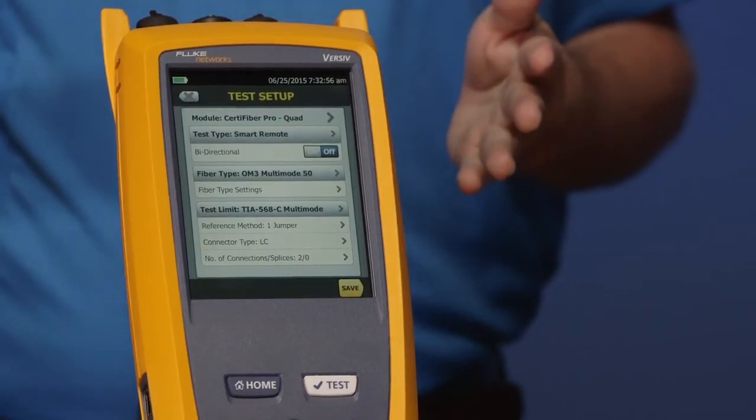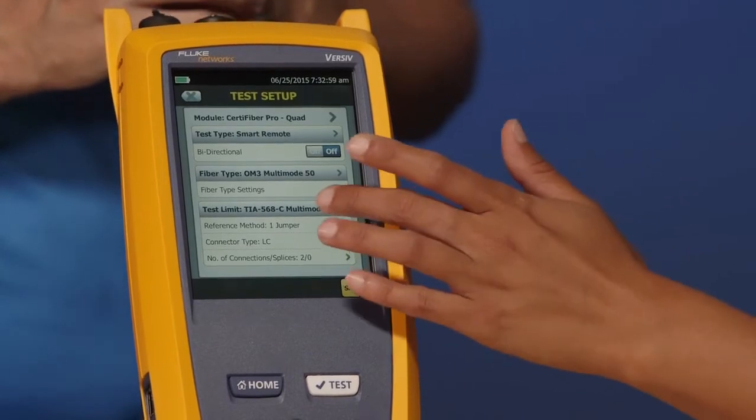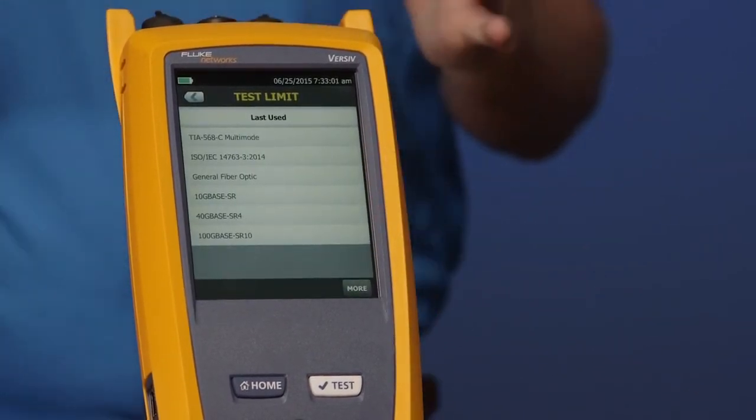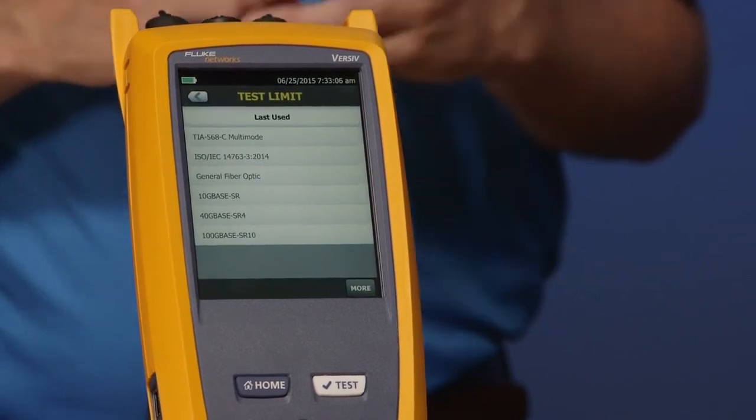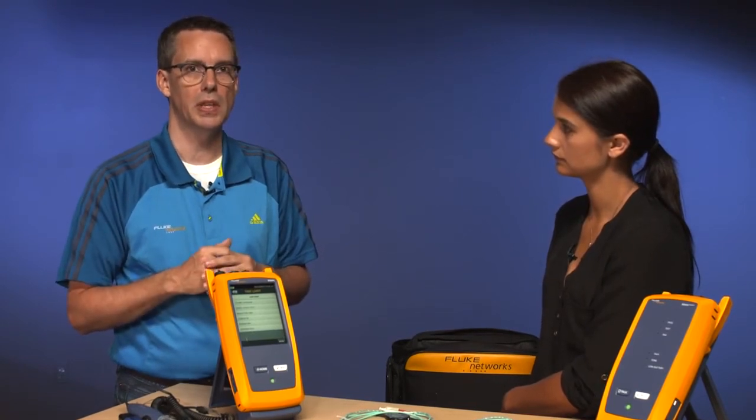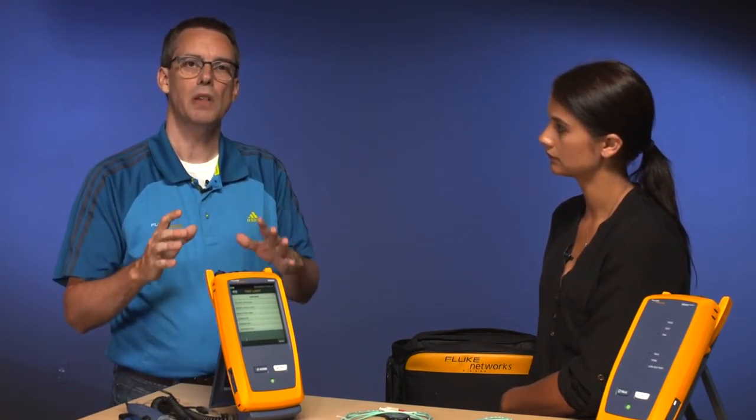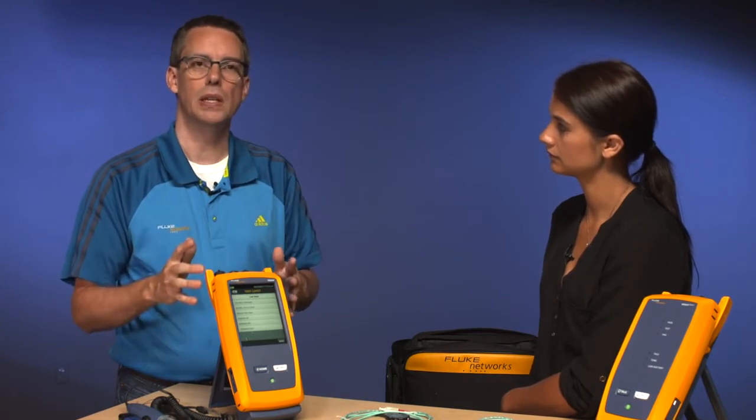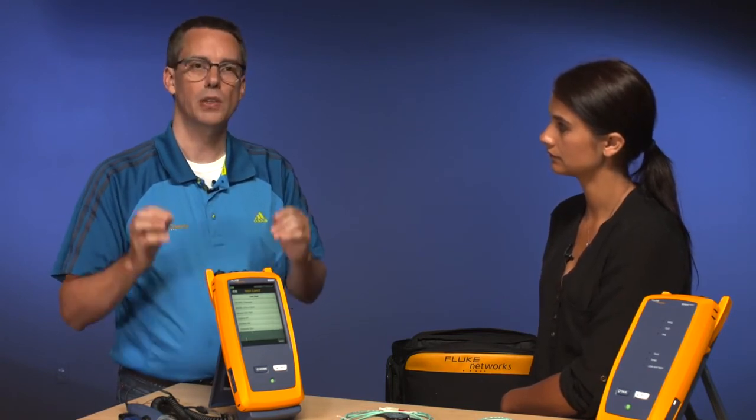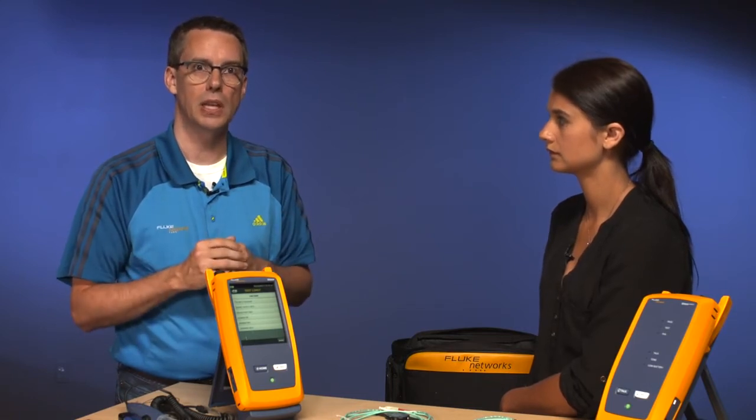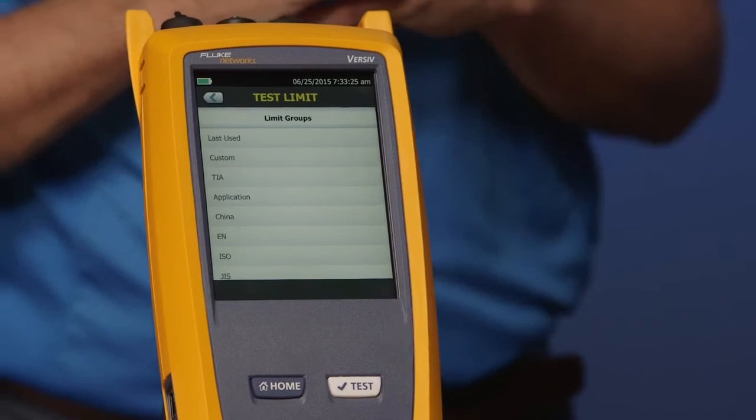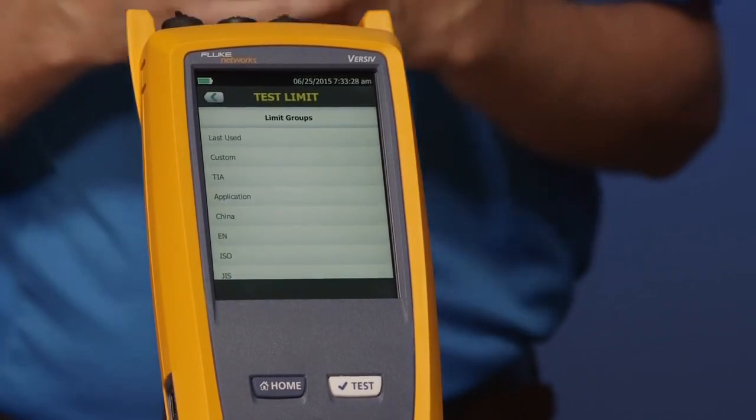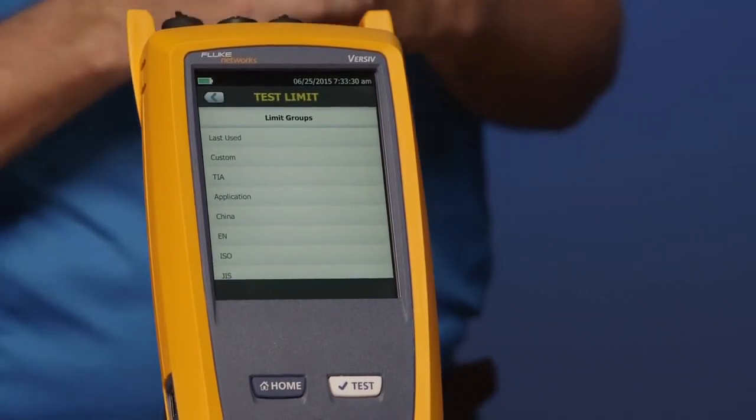So our next option here to select is our test limit. Go ahead and tap test limit for me, Amanda. And just like our copper testing, we've given you some most common options that are on there. Now, you could be testing ISO. You could be testing TIA. Make sure you look to your test specification. And again, that's one of the advantages of setting up the projects is you can do that in a calm office and set it all up. So the technician on site knows that they're testing to the correct test limit. Go ahead and tap more for me. And again, we see the same folders TIA, ISO, and everything else. Go ahead and tap TIA for me.